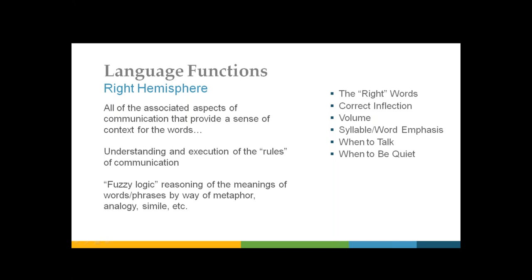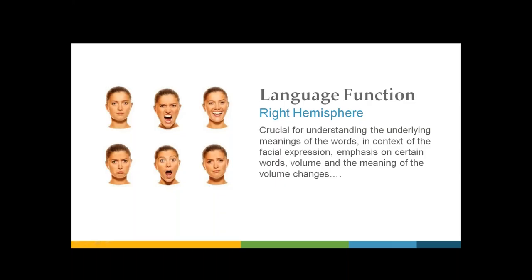Simile is looking at two different concepts and relating them by using the words like, as, or than. So 'he is fast as a speeding bullet' gives you an idea that this person is really fast using a comparison to make that point. Language function within the right hemisphere is also crucial for understanding the underlying meaning of words — not just the words, but the way in which they're delivered. The different facial expressions shown here: if you had the same words being delivered by each of those facial expressions, you would have a very different reaction and expectation.